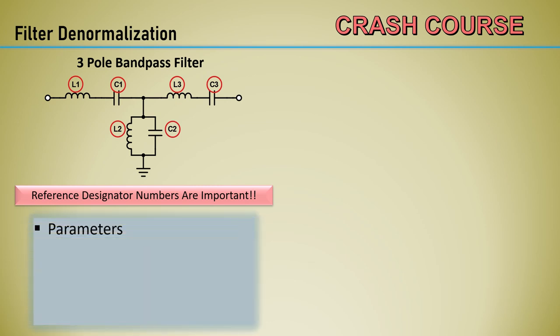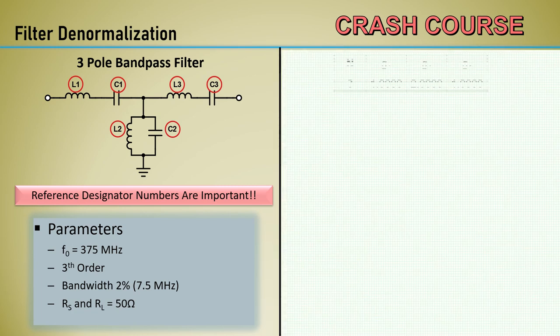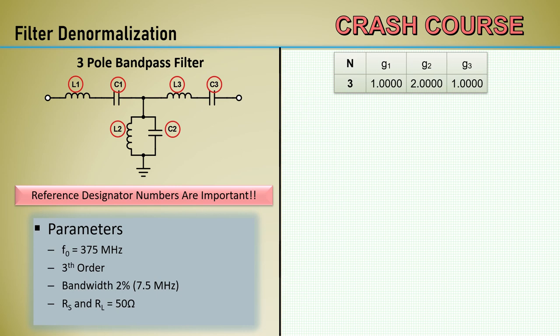Here are the parameters for the filter design. The center frequency is 375 MHz. It will be a 3-pole or third order filter. The bandwidth will be 2% which is 7.5 MHz. The impedance will be scaled to a 50-ohm system so the source impedance and load impedance is 50-ohms. Here is the row in the coefficients table for N equals 3 and here is that denormalization equation for series inductors that we will use. L1 equals G1 from the table which is 1 times R0 of 50 divided by omega C as 2 times pi times 375 e to the 6 times the bandwidth of 0.02 equals 1.06 microhenry. L3 is also in series and it turns out the coefficient for element 3 is also 1, so L3 equals L1.